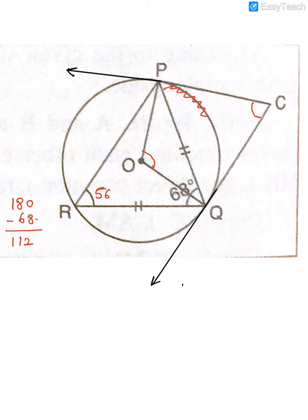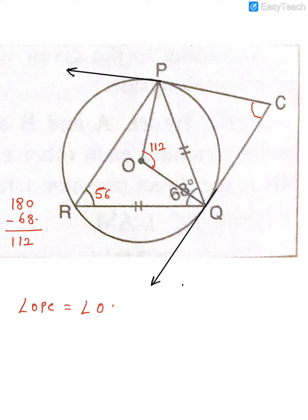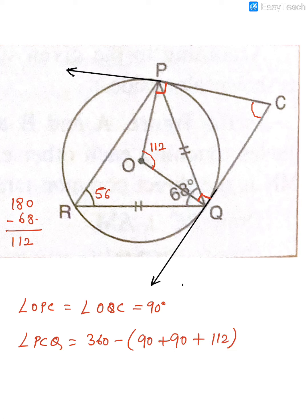To find angle POQ: this is the arc, the central angle and the inscribed angle at the circumference. The angle at the circumference is half the central angle, so angle POQ = 2 × 56° = 112°. Angle OPC = angle OQC = 90° because radius is perpendicular to tangent. Therefore, angle PCQ = 360 − 90 − 90 − 112 = 68°.